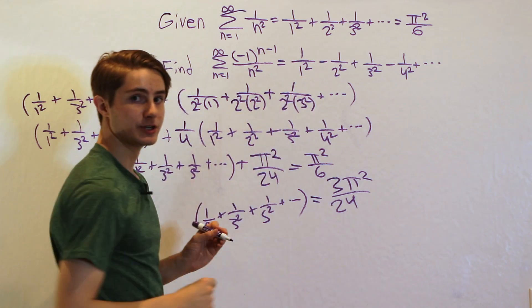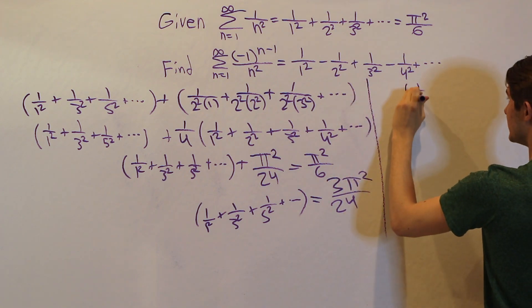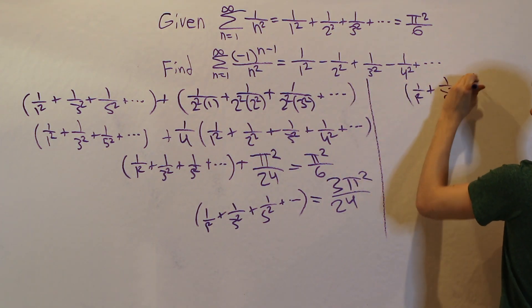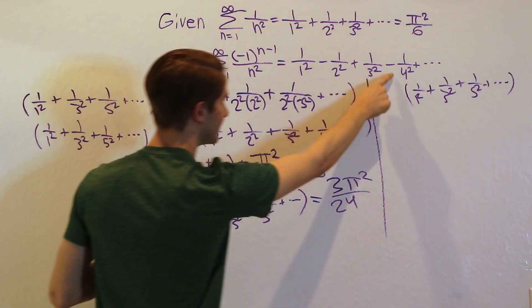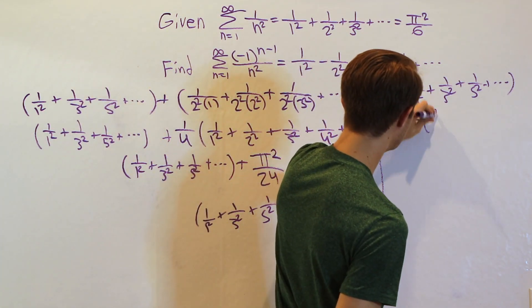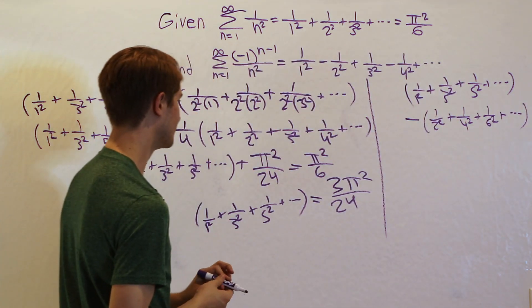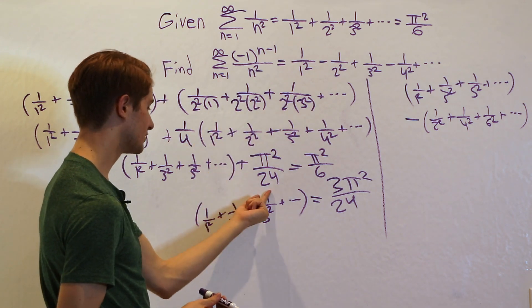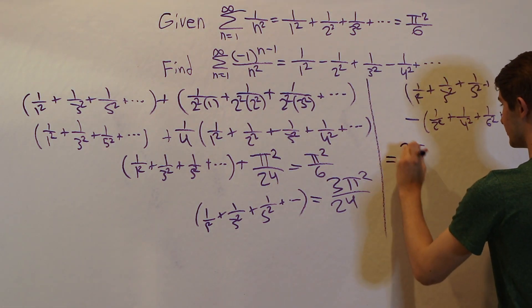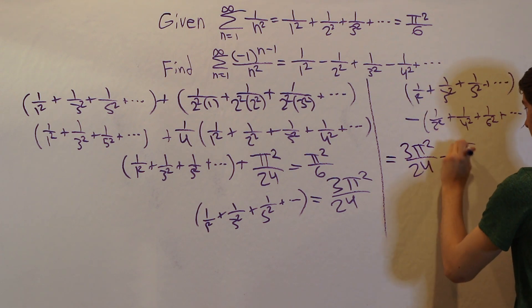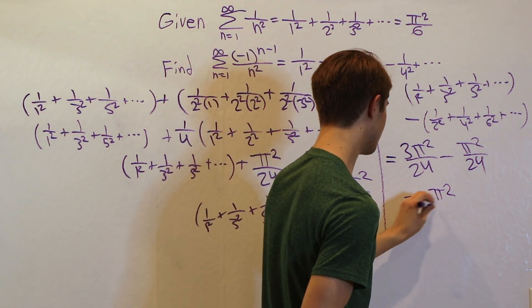Now it's time to solve our original problem. The alternating sum has 1 over 1 squared plus 1 over 3 squared plus 1 over 5 squared and so on, but this time we subtract the even terms: minus 1 over 2 squared plus 1 over 4 squared plus 1 over 6 squared, and so on. We know each of these values: the sum of the even squares is pi squared over 24, and the sum of the odd squares is 3 pi squared over 24. So we have 3 pi squared over 24 minus pi squared over 24, which gives us 2 pi squared over 24, or pi squared over 12.